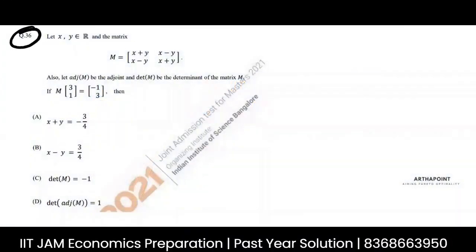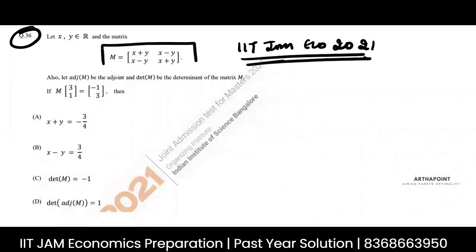This is question number 36 of IIT JAM Economics 2021 paper. Let's see what the question is saying. You're given a matrix M.